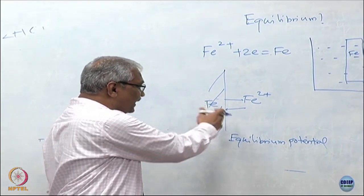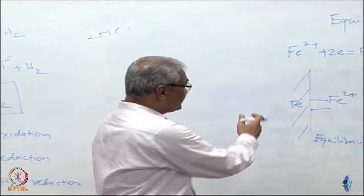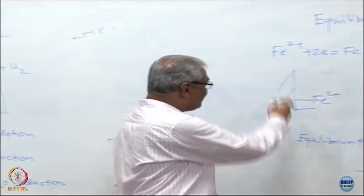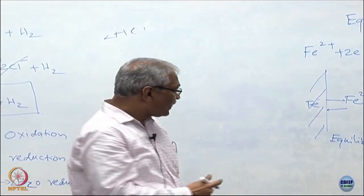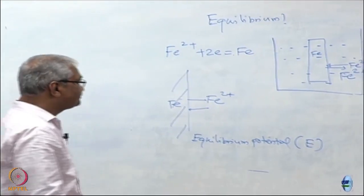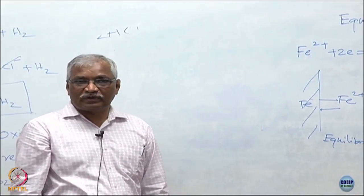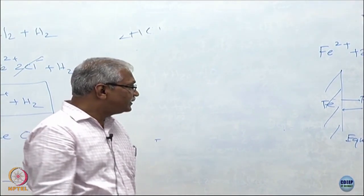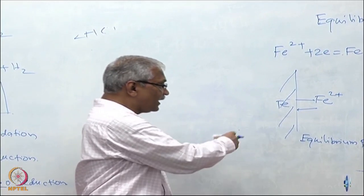I define it as: I have a metal surface and Fe²⁺ ions going back and forth between the metal and solution. A potential is being established at this interface, and that potential is called the equilibrium potential. I can look at this from a thermodynamic point of view — the free energy change delta G — and at the same time define this process in terms of an equilibrium potential E.